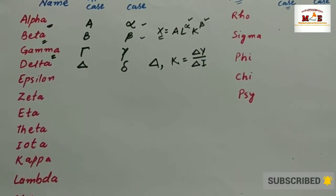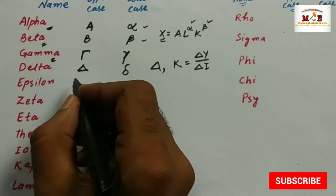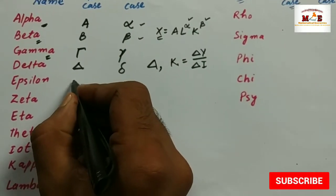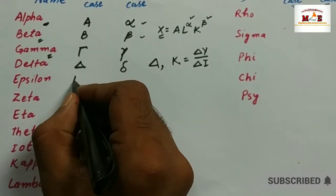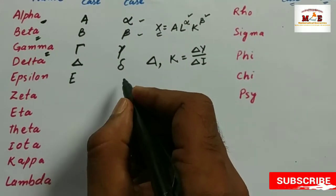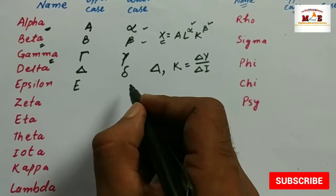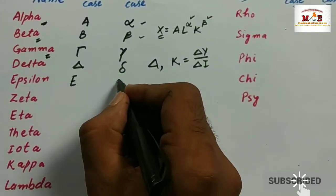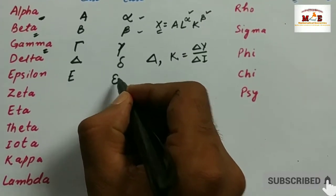The next one is epsilon. Its uppercase is just like E, and its lowercase is written like this.